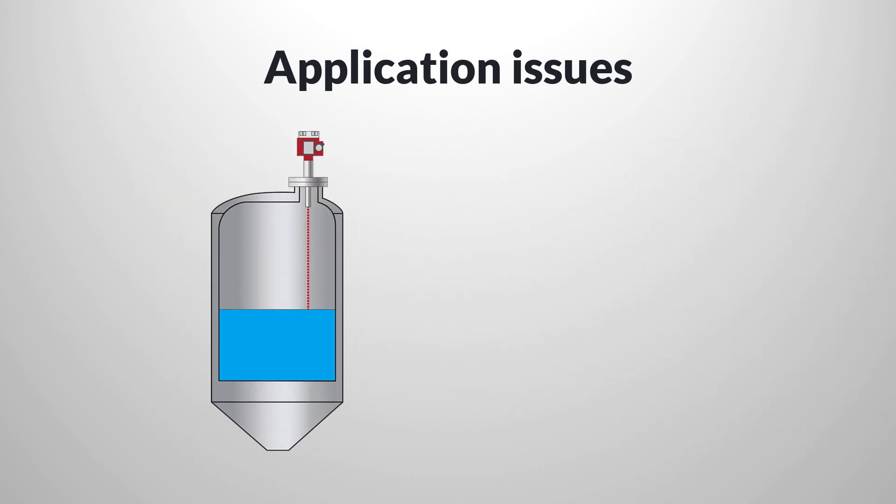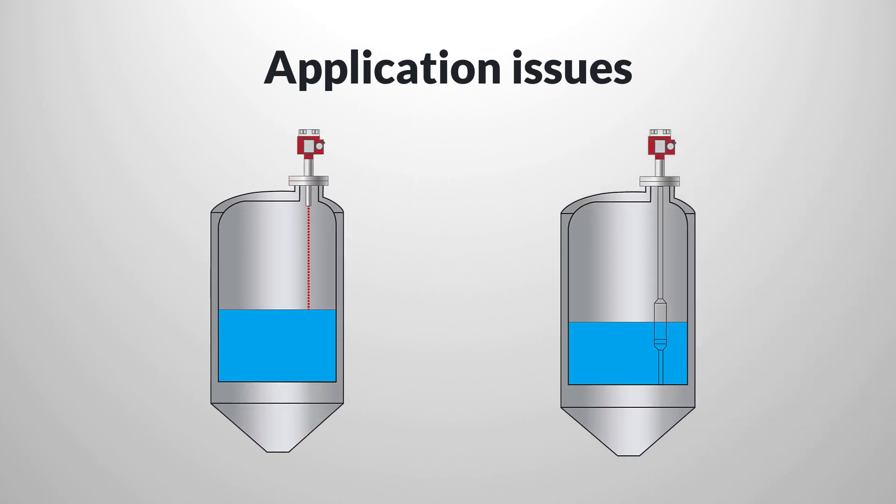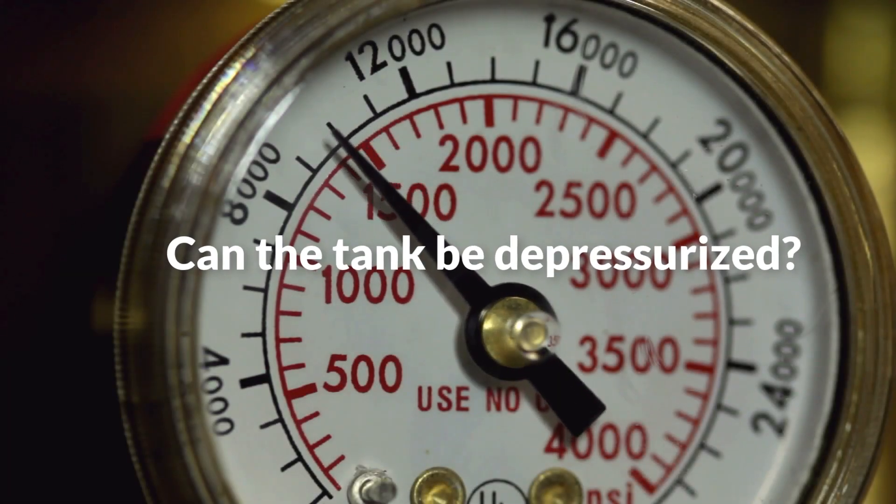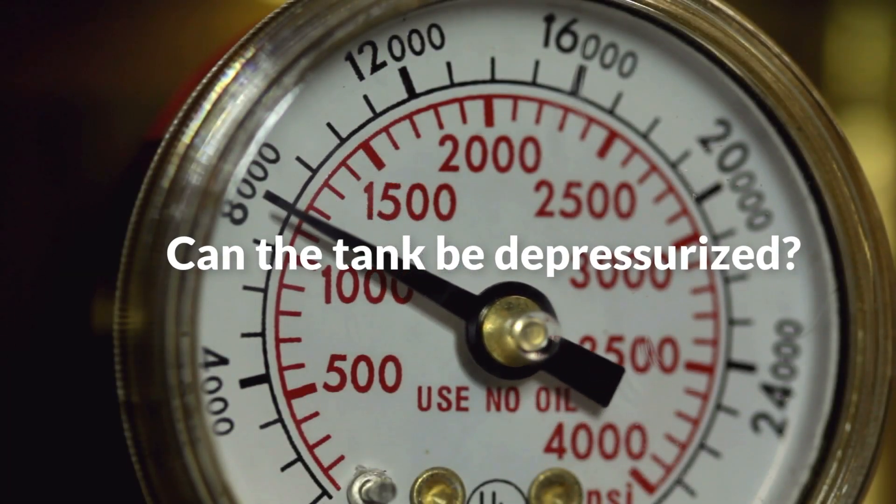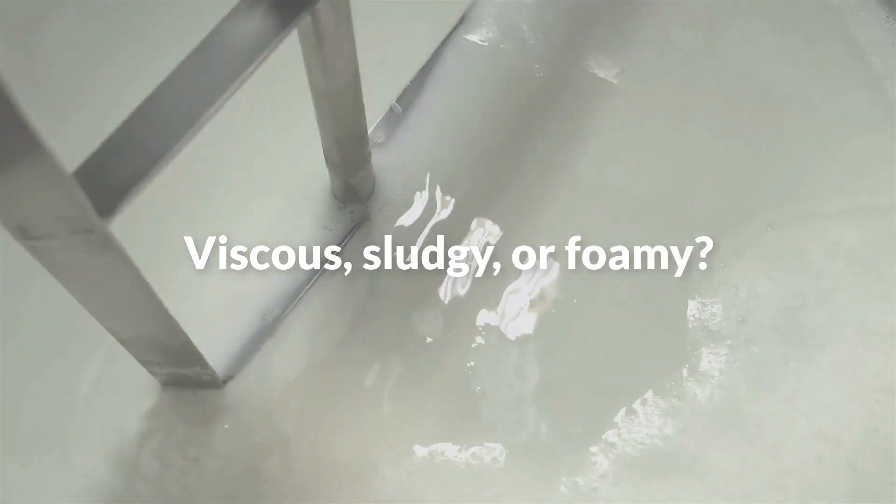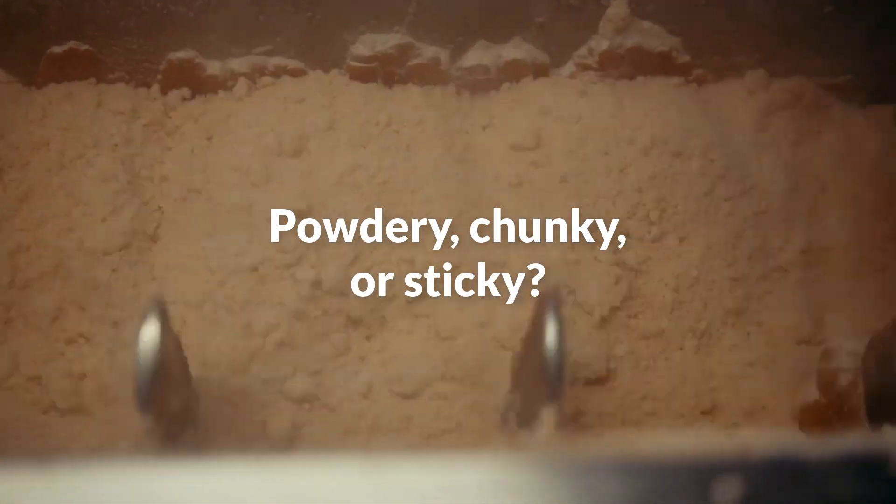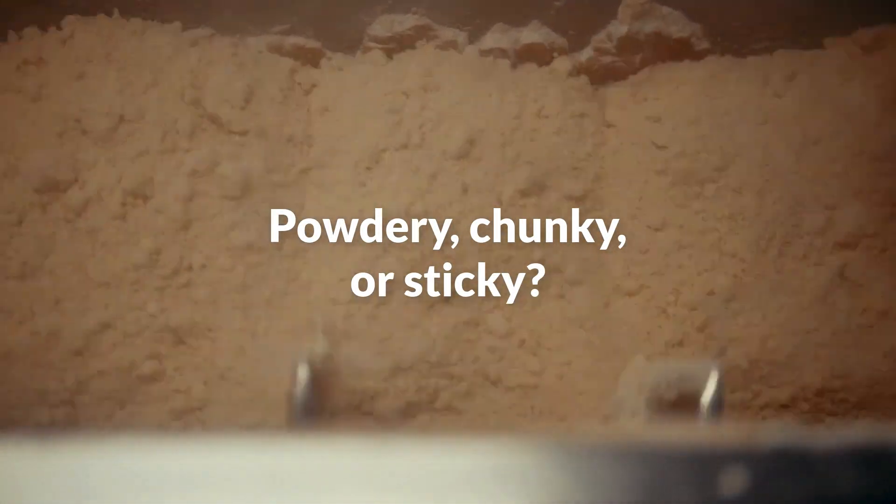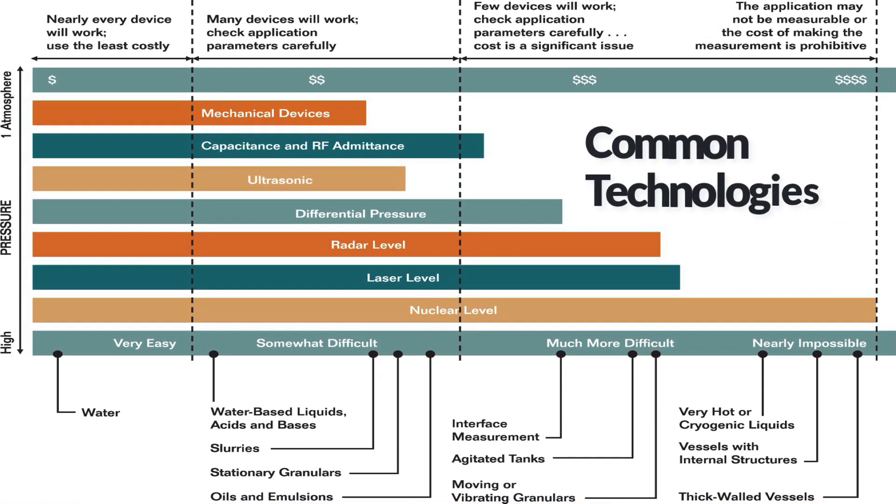Can the sensor come in contact with the process fluid, or must it be located in the vapor space? Is direct measurement of the level needed, or is it acceptable to measure hydrostatic head, which responds to both level and density changes? Can the tank be depressurized or the process shut down to remove or maintain the sensor? Are the tank contents viscous, sludgy, or foamy? Are they powdery, chunky, or sticky?